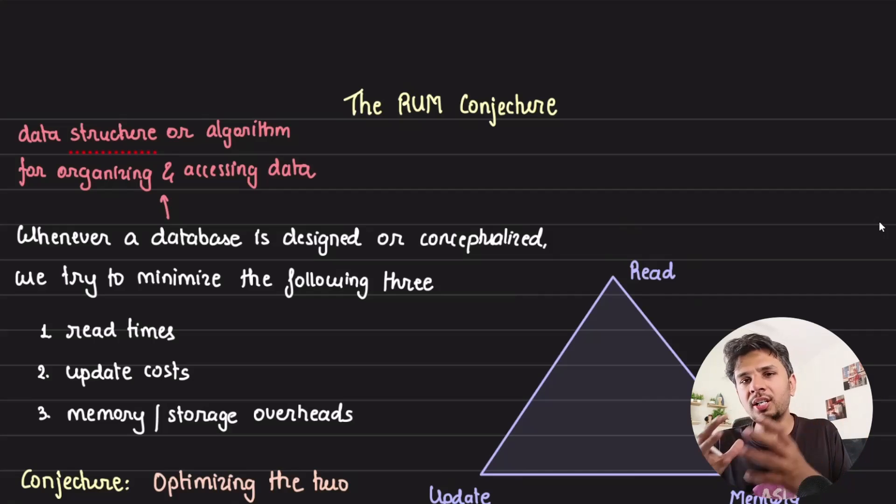Whenever a database is designed or conceptualized, we try to minimize three things: the read times, the update costs, and the memory or storage overheads. This is known as the RUM conjecture.